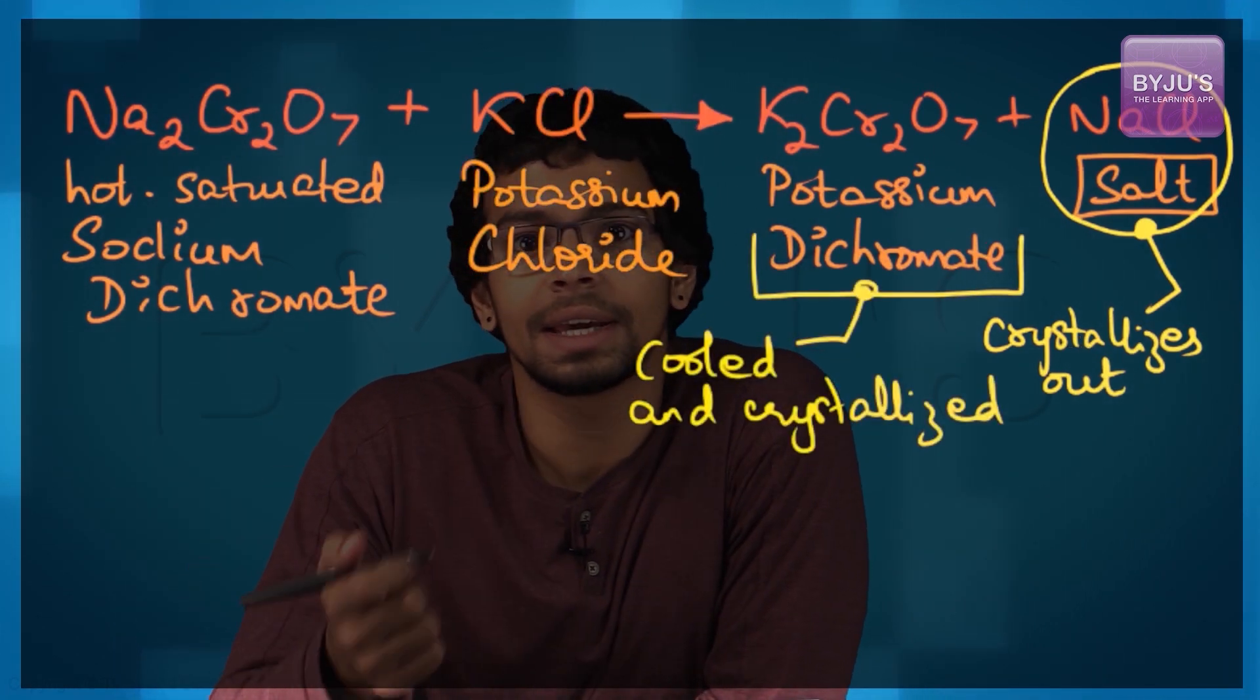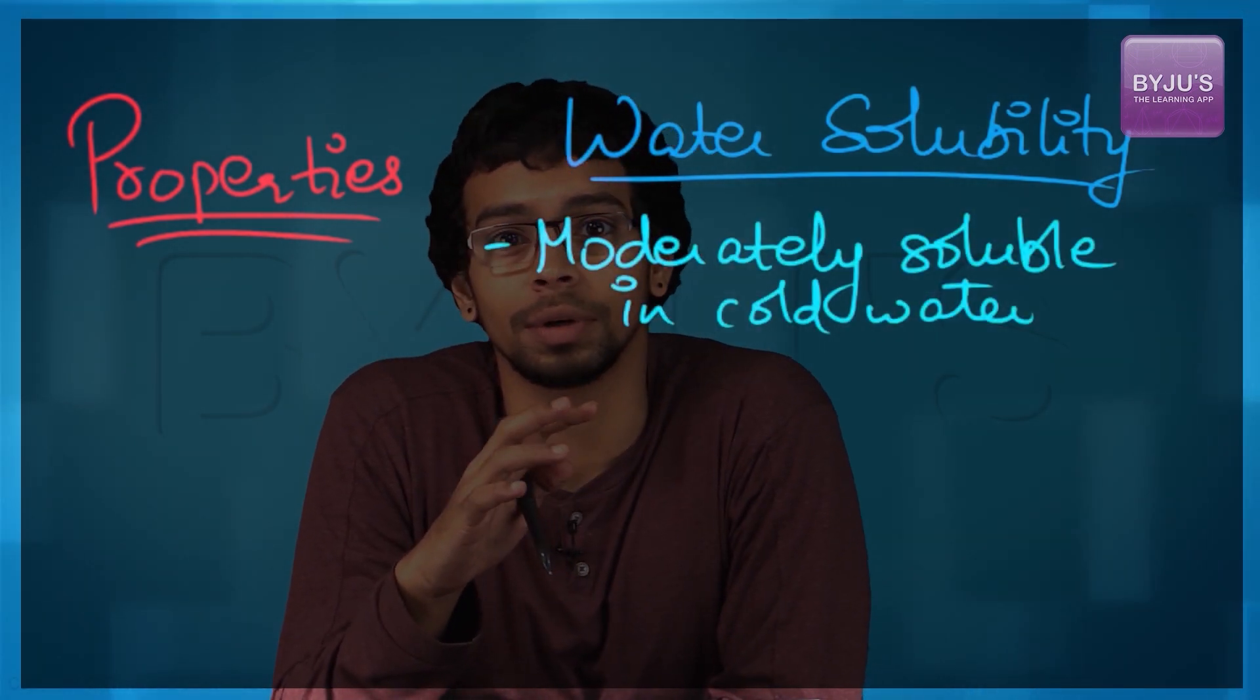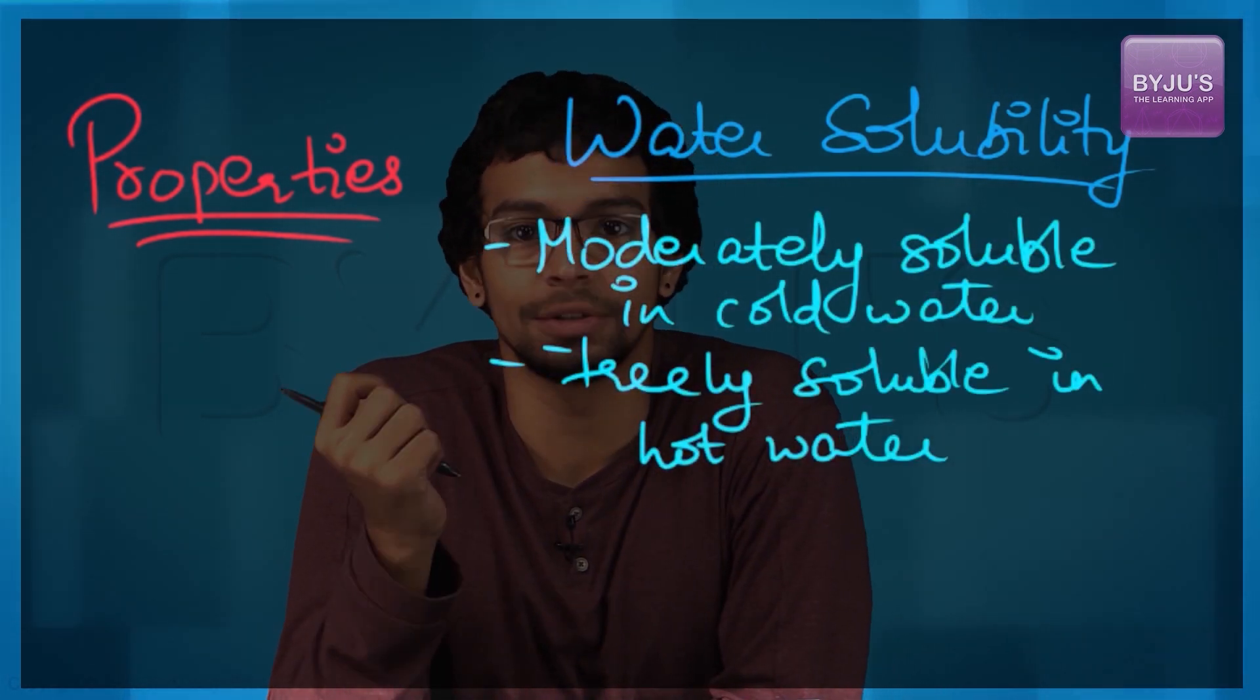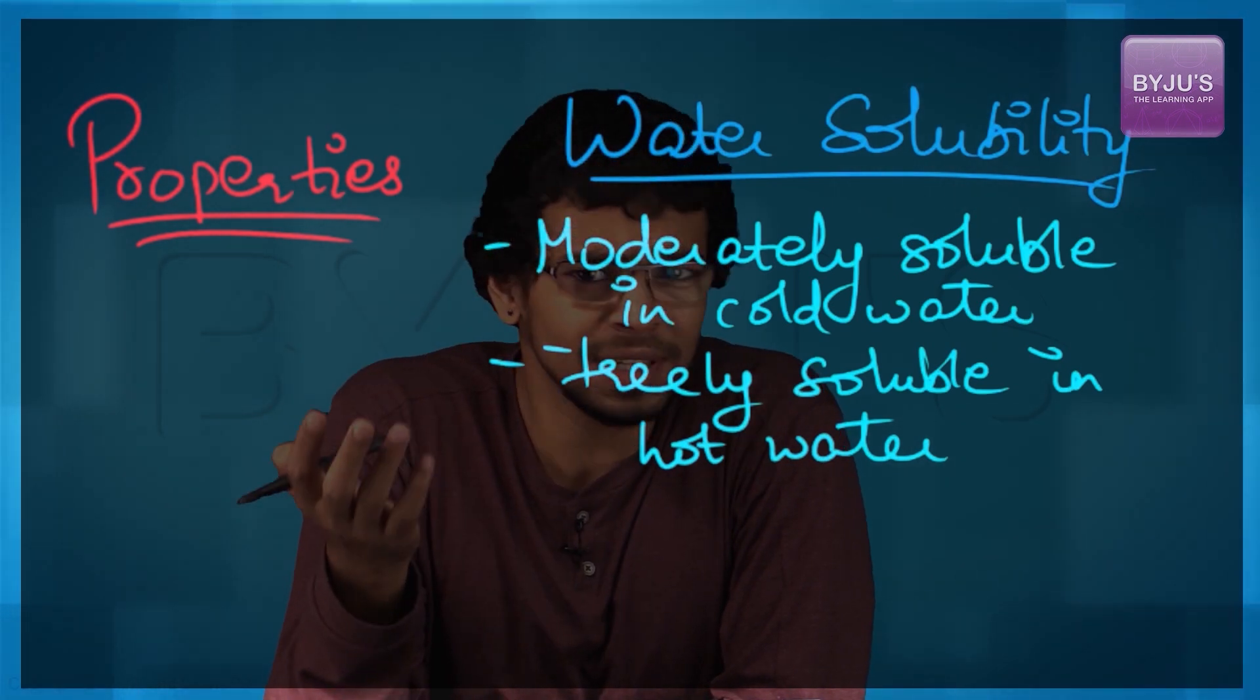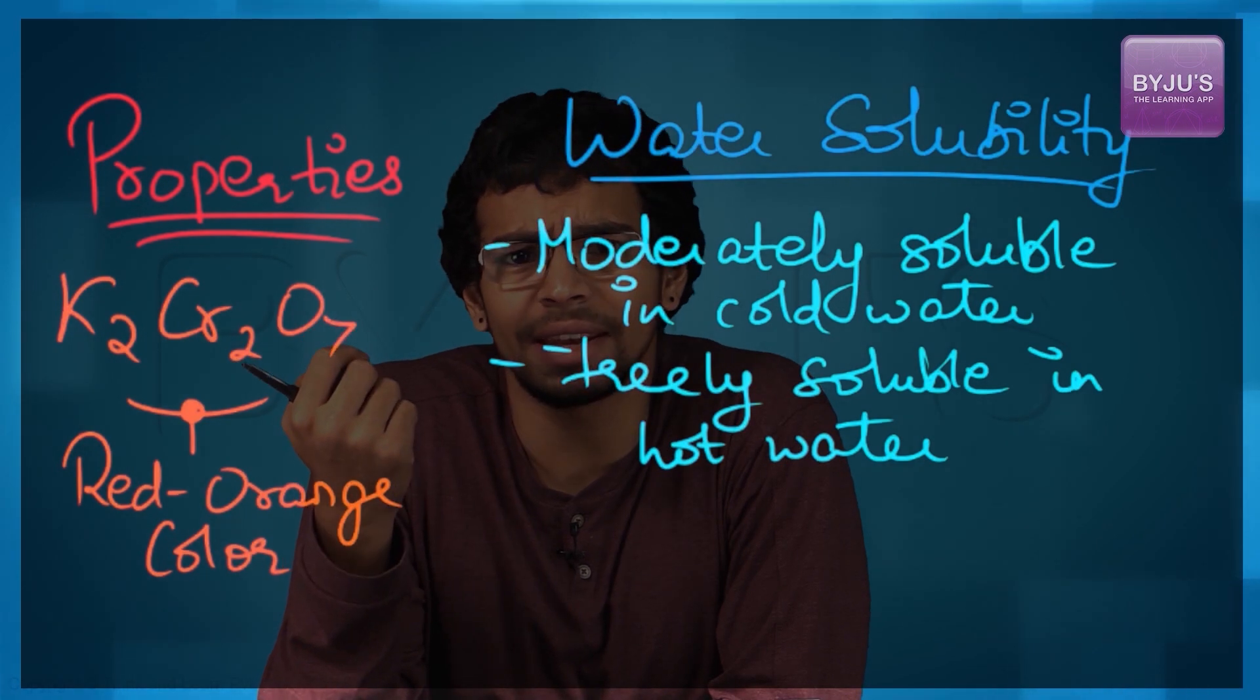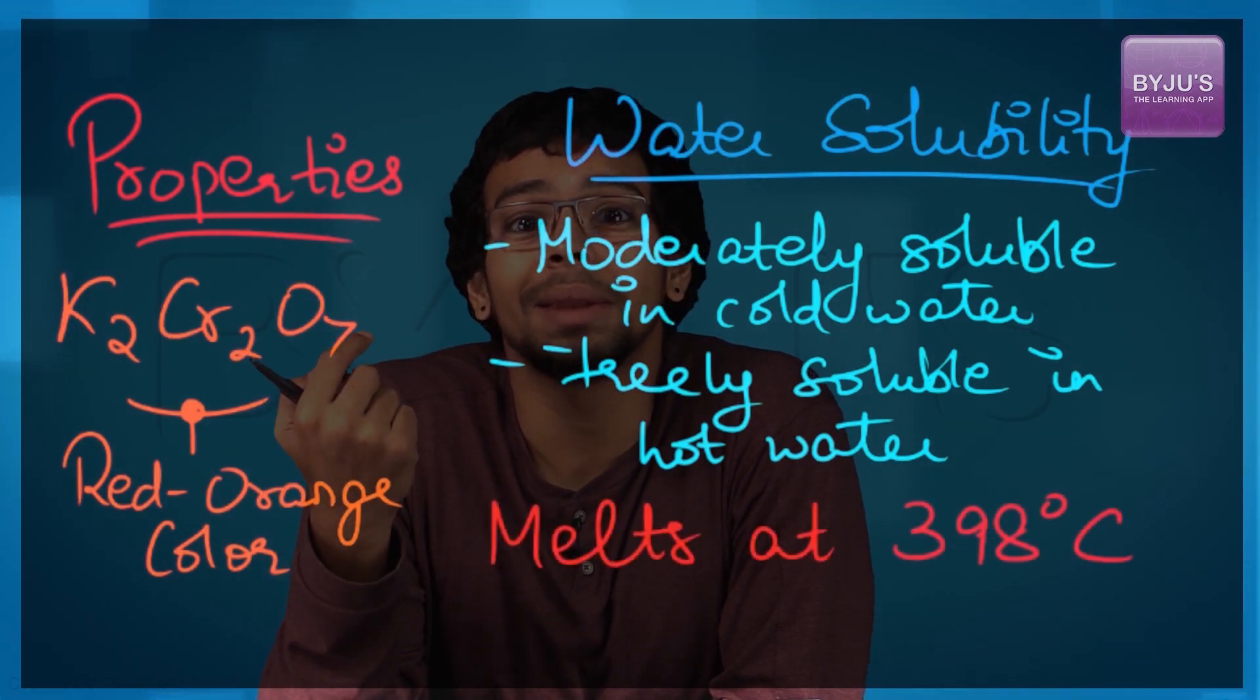Let's look at the properties of potassium dichromate. Regarding solubility in water, potassium dichromate is moderately soluble in cold water but readily soluble in hot water. It is an orange-red colored substance, ionic in structure.